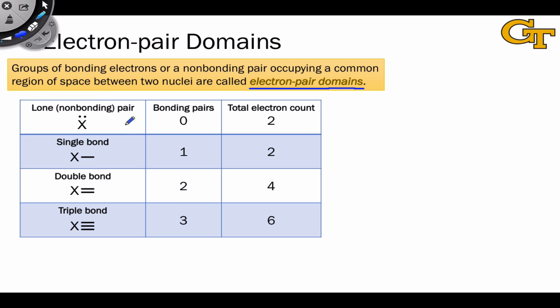On this slide I've listed four different types of electron pair domains. Each of these is considered a single domain, even the double and triple bonds, and that's an important point. A non-bonding lone pair has a total electron count of two. A single bond similarly has two total electrons and one bonding pair.